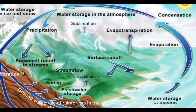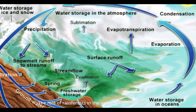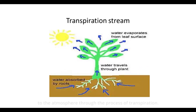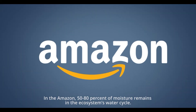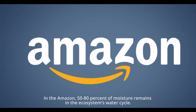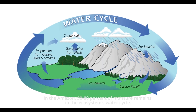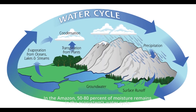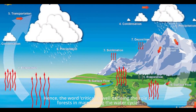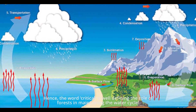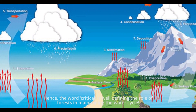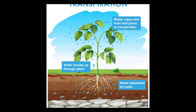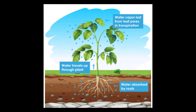The role of rainforests in the water cycle is to add water to the atmosphere through the process of transpiration. In the Amazon, 50–80% of moisture remains in the ecosystem's water cycle. Hence, the word 'critical' is well-defining the role of forests in maintaining the water cycle. Without them, you are going to lose that part of transpiration.